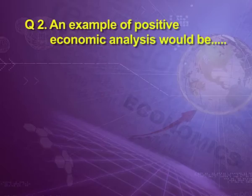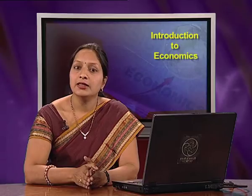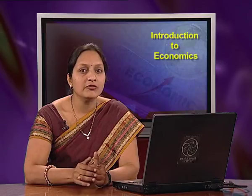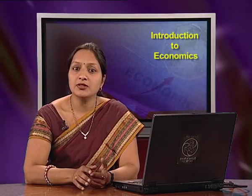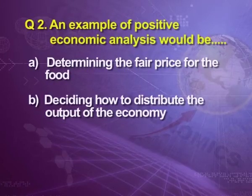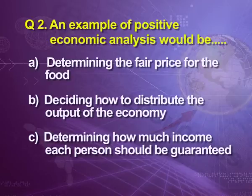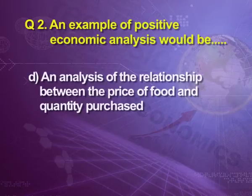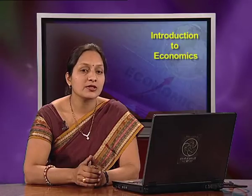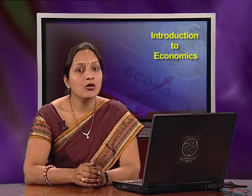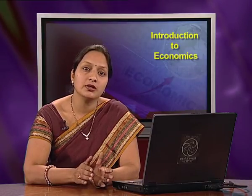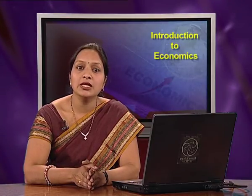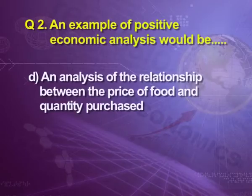Question 2: An example of positive economic analysis would be — (A) determining the fair price for food, (B) deciding how to distribute the output of the economy, (C) determining how much income each person should be guaranteed, (D) an analysis of the relationship between the price of food and the quantity purchased. The answer is option D. Options A, B, and C all make suggestions about what should be done, whereas option D only analyzes a cause-and-effect relationship — which is positive.